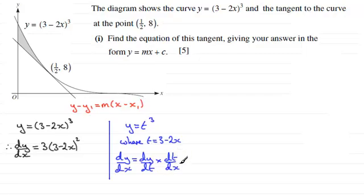Now I need to multiply it with dt by dx. So if I differentiate t with respect to x, we're just going to get minus 2. So put that down as minus 2 there. And if I clean this up, 3 times minus 2 is minus 6. And we've got then, that's multiplied with 3 minus 2x all squared. So that gives us the gradient then at any point on the curve.